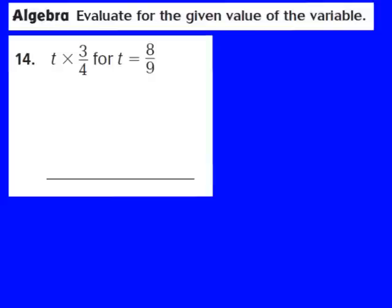Now let's take a look at question number 14. It's an algebra problem. The directions say to evaluate for the given value of the variable — a variable is just a letter that stands for a number. For question 14, we have t times the fraction 3/4, where t equals 8/9. So our variable t represents 8/9. We replace t in the expression with 8/9, giving us 8/9 times the fraction 3/4.